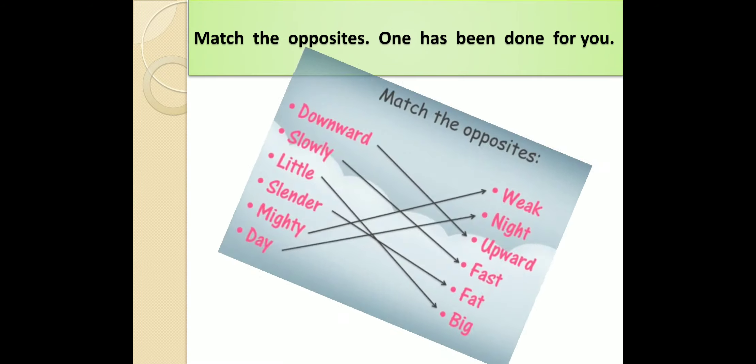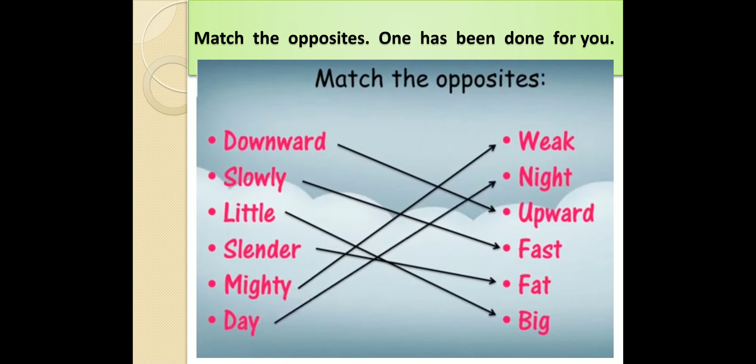Match the opposites. Here. So what is the opposite of downward? This is upward. Slowly: Fast. Little: Big. Slender: Fat. Mighty: Weak. Day: Night.